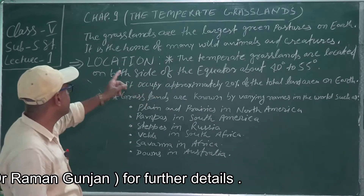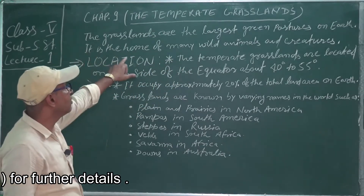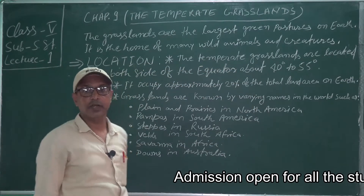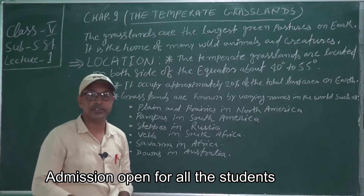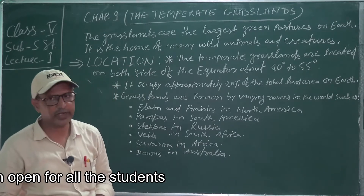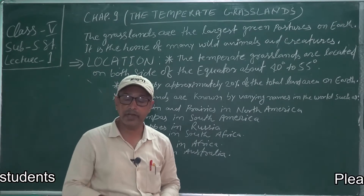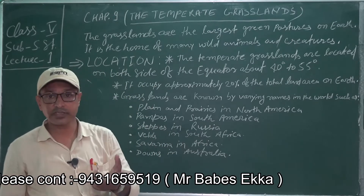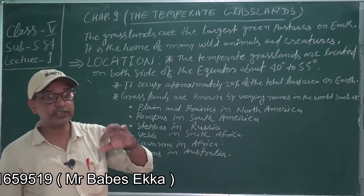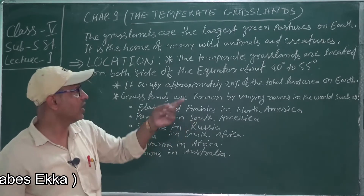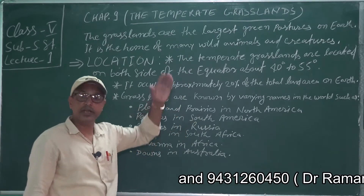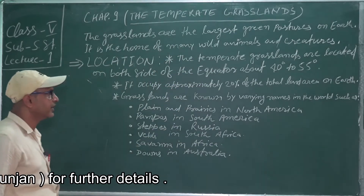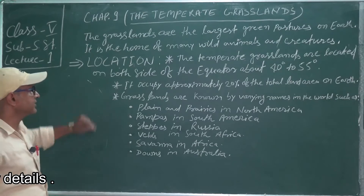Grassland is the home of many wild animals and creatures. Not only herbivorous animals are found here, but carnivorous animals are also found, because carnivores are dependent on herbivores, and herbivores find very favorable conditions in these places.